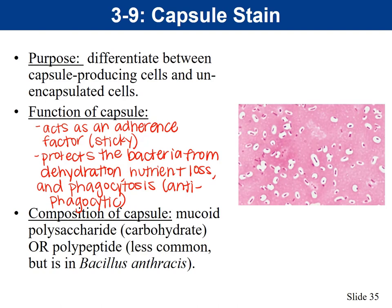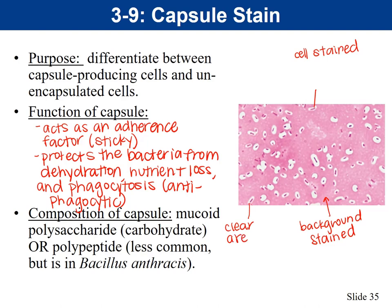Notice in this capsule stain that the background is stained, and the part in the middle — that's the cell — is also stained. You can see in between the background and the cell a clear area, and that clear area is going to be the capsule. All of these clear areas around the cells are going to be the capsules. What type of dye do you think is used where the background is stained? The answer is we're going to use an acidic or negative stain.